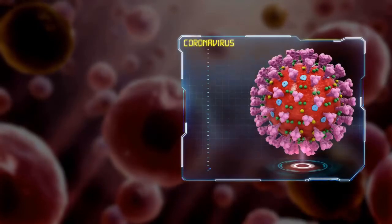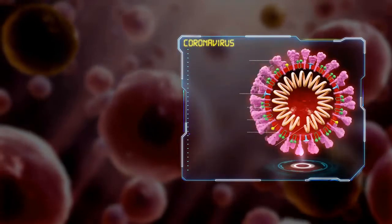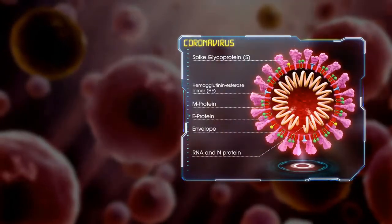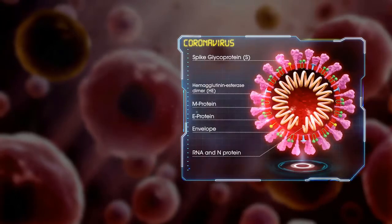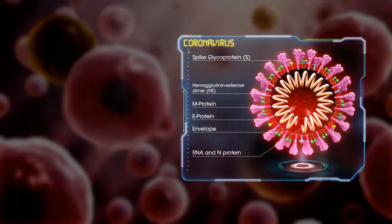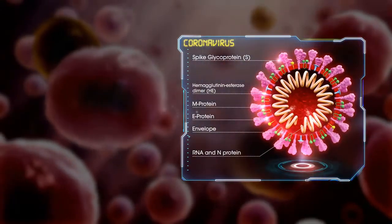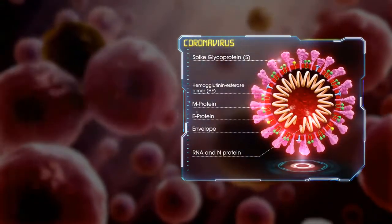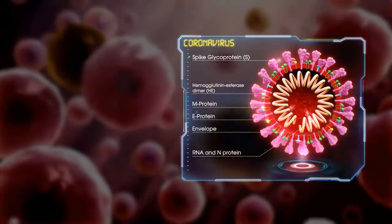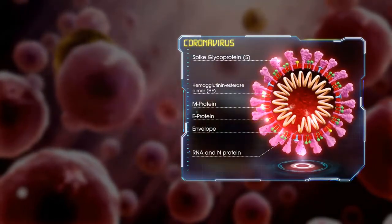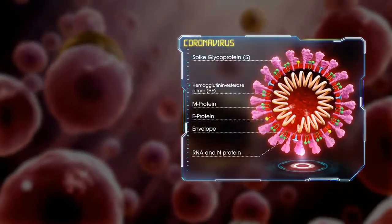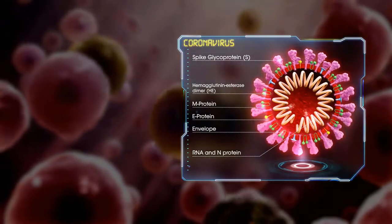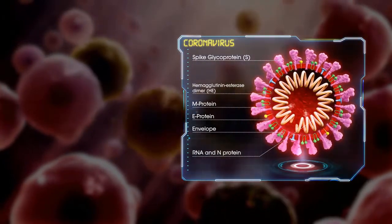The structure of coronavirus has multiple parts. Inside the virus lies the genetic encoding that allows the virus to hijack human cells and turn them into virus factories. A protein encapsulates the genetic material, known as the viral envelope. On the surface of the virion are S and HE proteins.